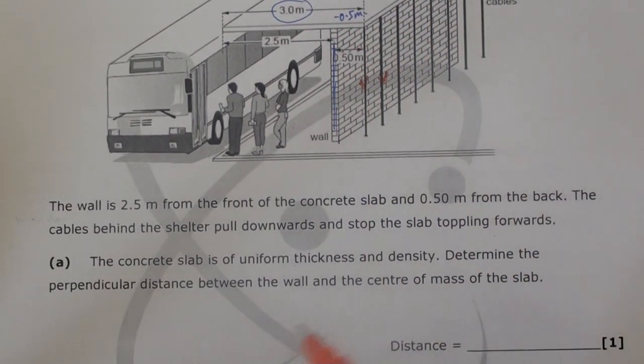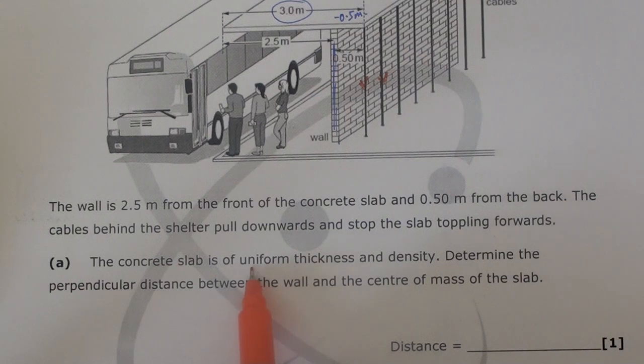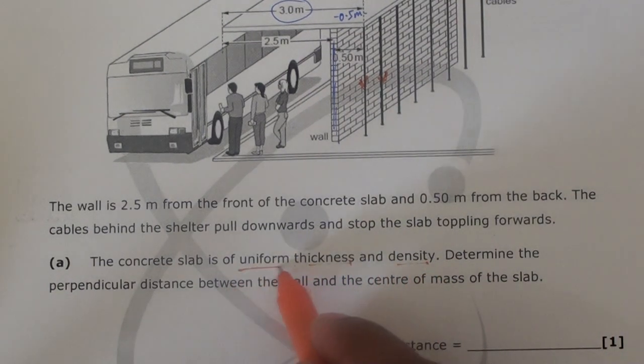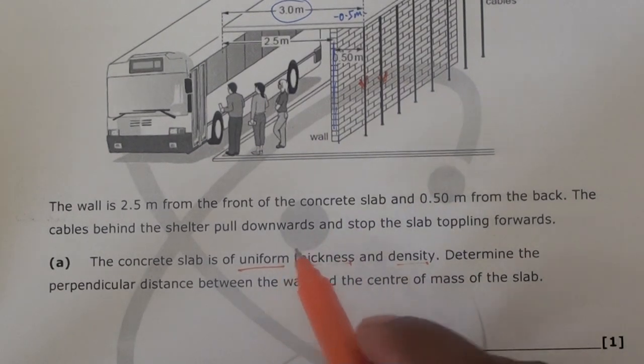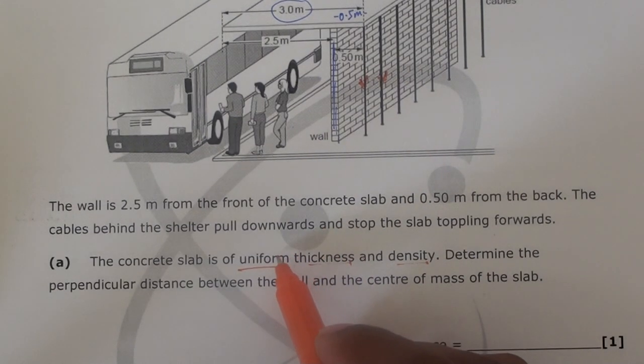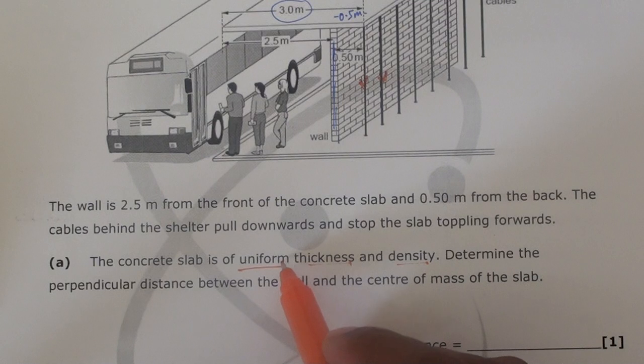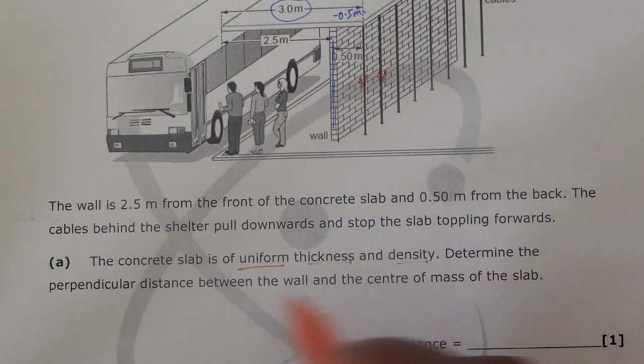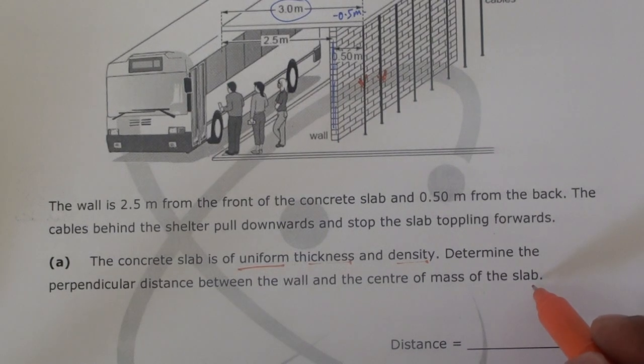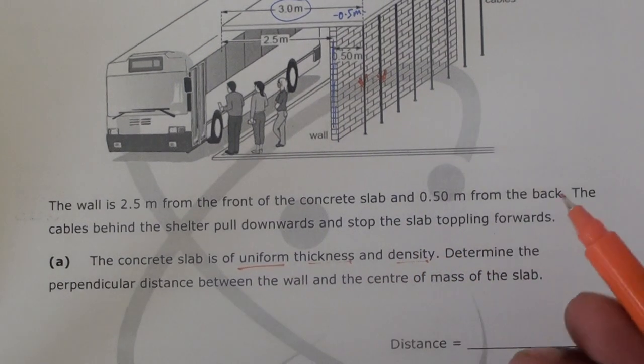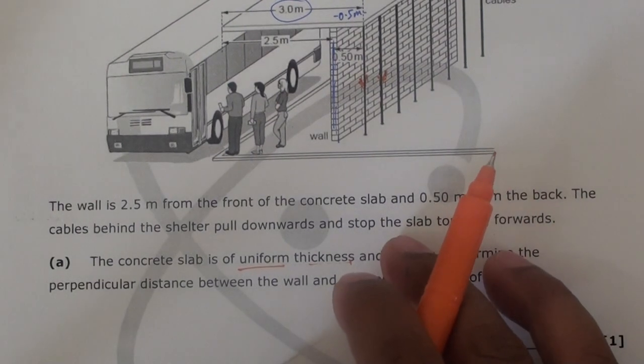Now let's go to the question. The concrete slab is of uniform thickness and density. The word uniform is very important. In class I have explained that for uniform objects the center of mass lies exactly in the geometric center, in the middle of the object. So determine the perpendicular distance between the wall and the center of mass of the slab. Now we have to see where the center of mass is acting.